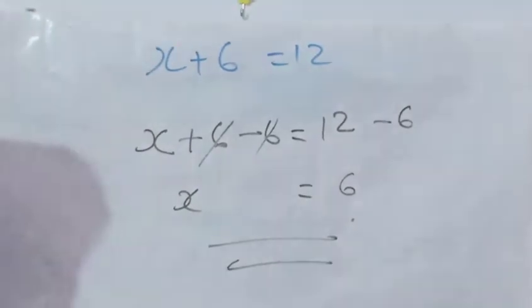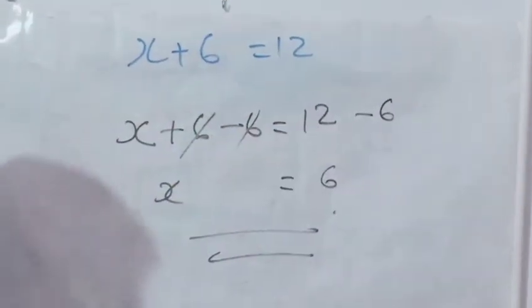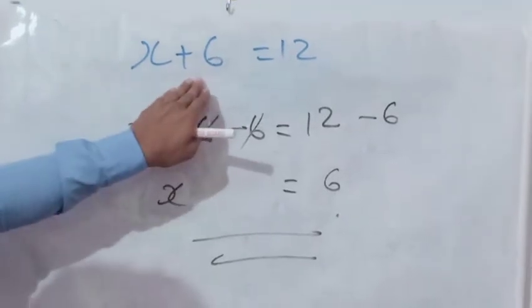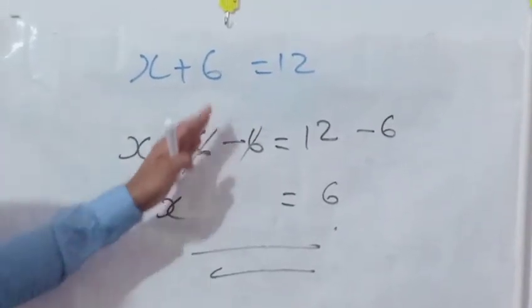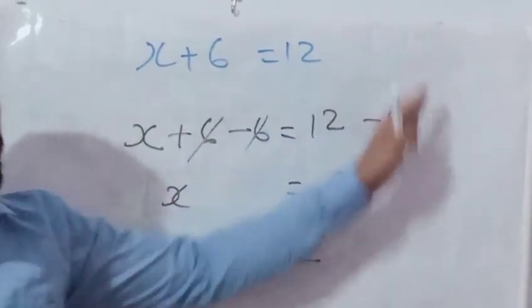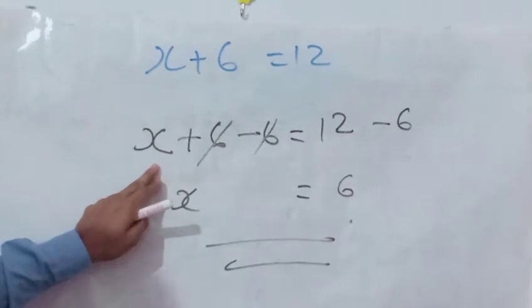One more time I will tell what we did. Equation: X + 6 = 12. In the equation, plus 6 is there. So we added with this equation - this is left hand side and this is right hand side. I already told about this.